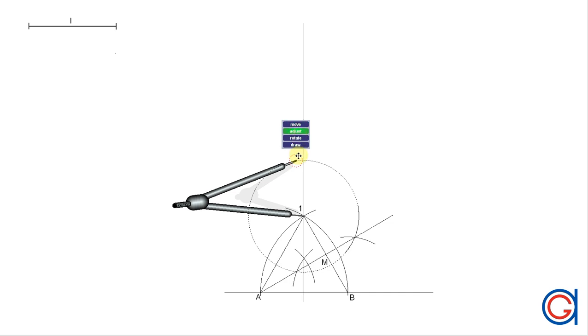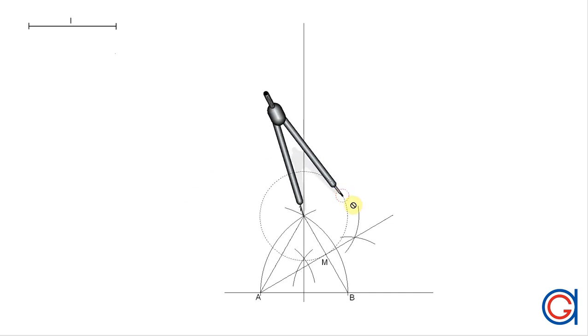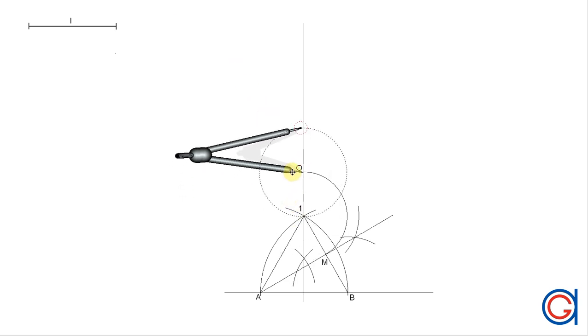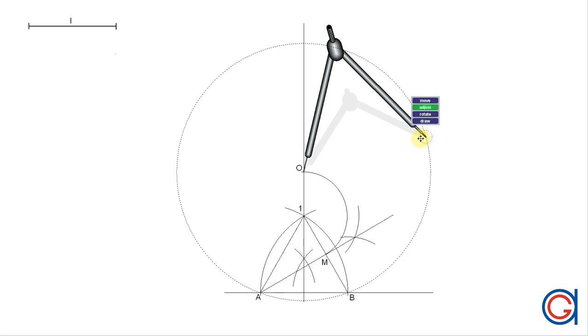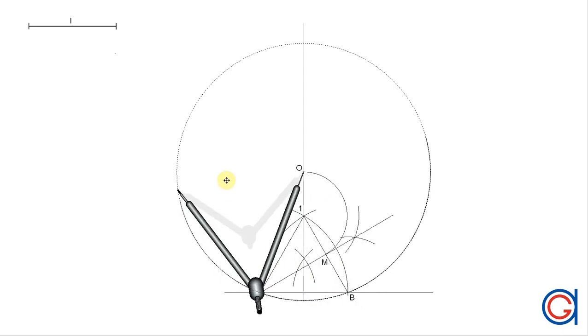The next step is to set the compass to the length 1M, and centering the compass on point 1, we scribe an arc until it cuts the vertical line at a point which we will call O as can be seen here. And this point O is going to be the center point of the circle that our nonagon is going to be inscribed inside. And now, centering the compass on this point O with length OA, we draw a circle as shown here.